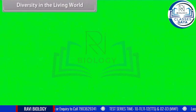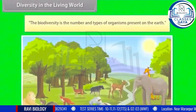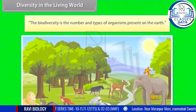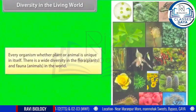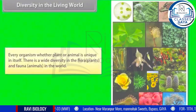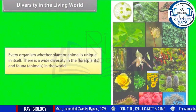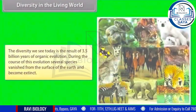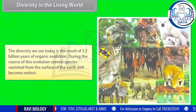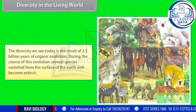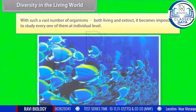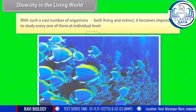Diversity in the living world: biodiversity refers to the number and types of organisms present on the earth. Every organism, whether plant or animal, is unique in itself. There is wide diversity in the flora (plants) and fauna (animals) of the world. The diversity we see today is the result of 3.5 billion years of organic evolution. During this evolution, several species vanished and became extinct. With such a vast number of organisms — both living and extinct — it becomes impossible to study every one of them at an individual level.